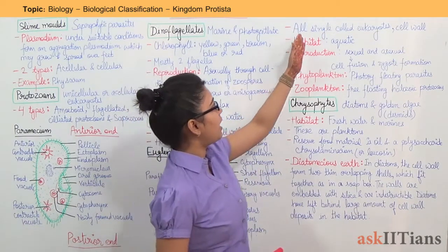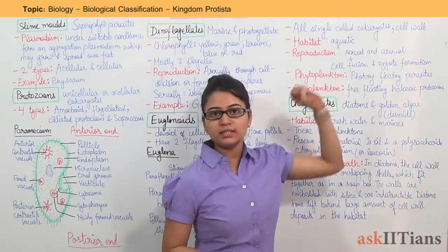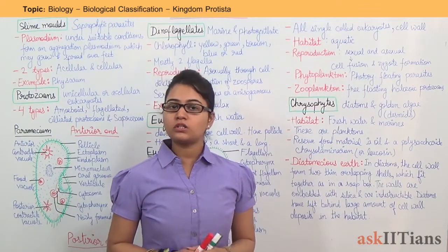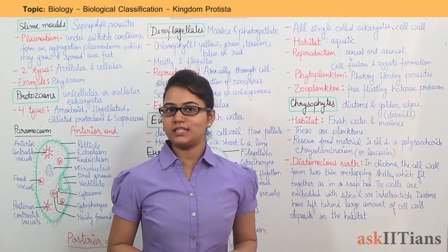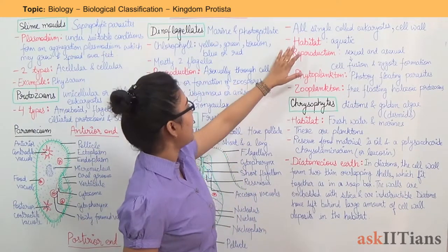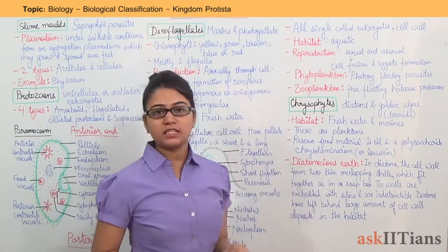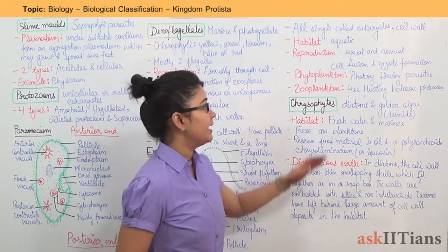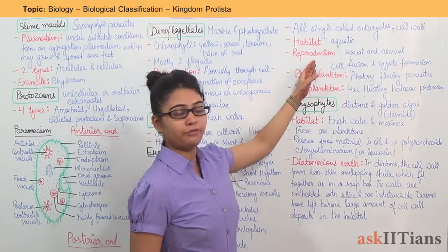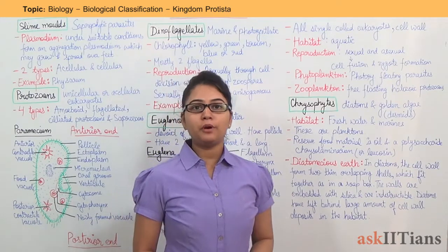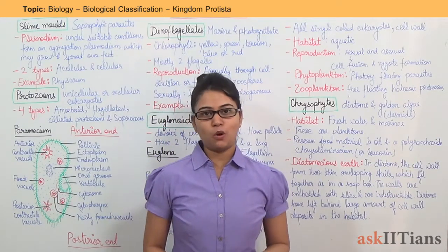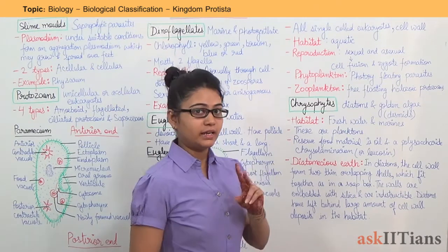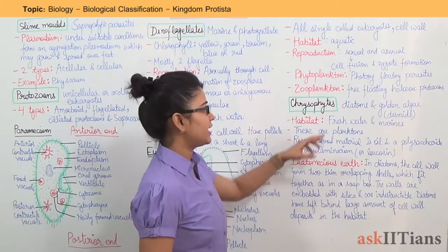Protista are all unicellular eukaryotes. Cell wall is present in them. Next is habitat — habitat is aquatic; they are found in aquatic habitats. Next is mode of reproduction. Mode of reproduction is both sexual as well as asexual — there are two processes taking place.